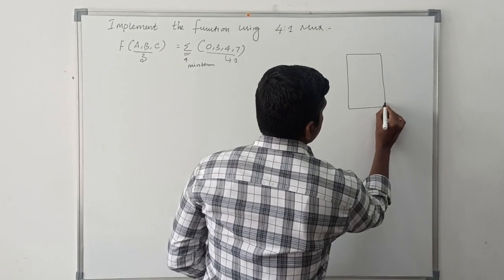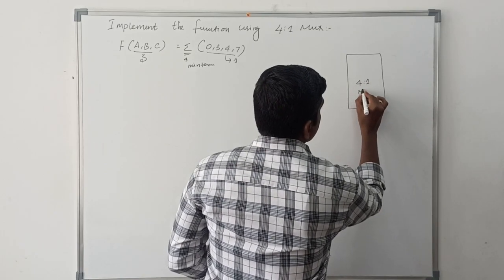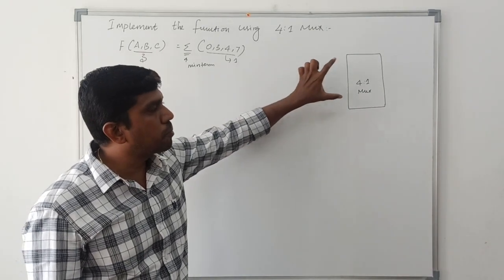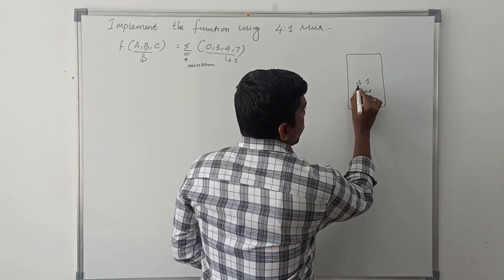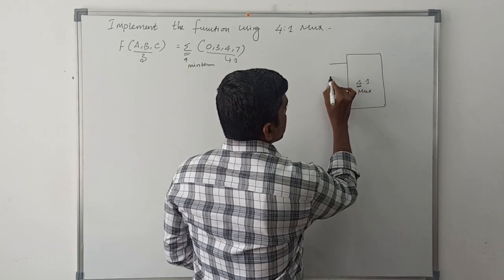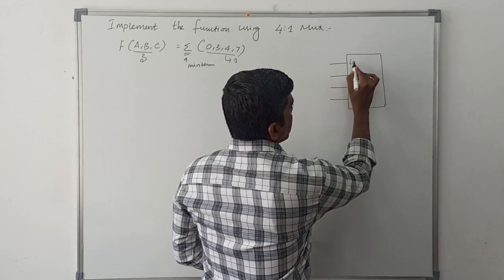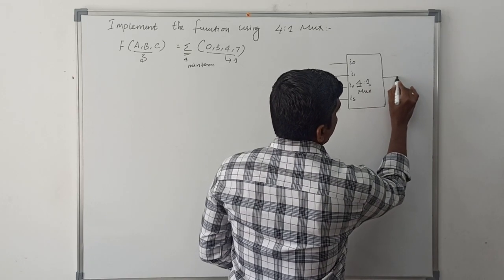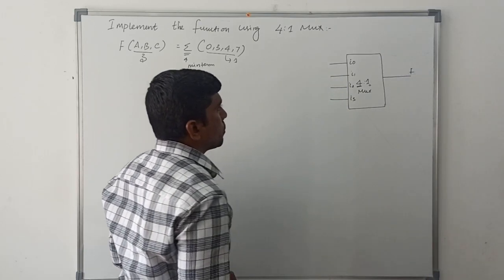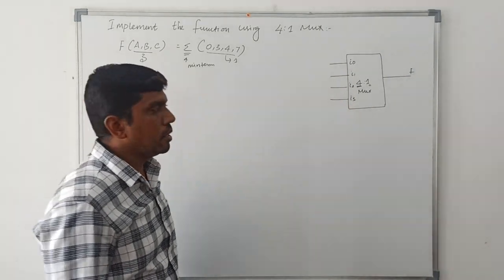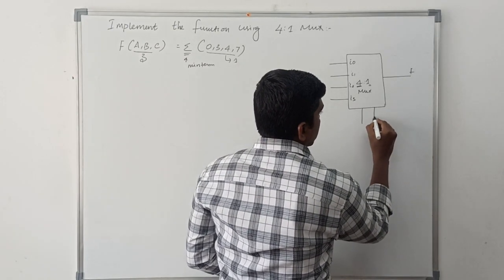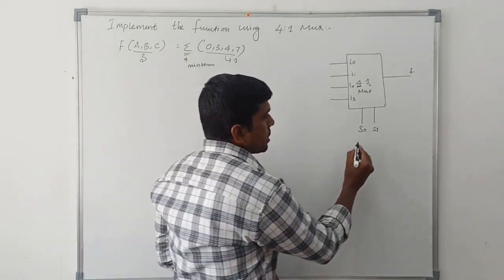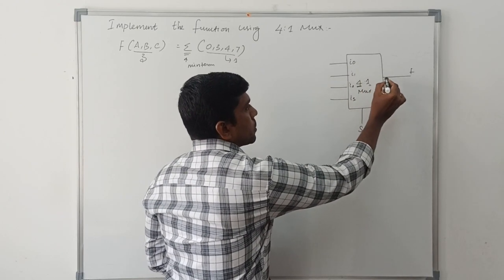It is a 4-to-1 MUX. MUX means many inputs to 1 output — it converts many inputs to 1 output. The '4' represents 4 inputs, named I0, I1, I2, and I3. The '1' represents 1 output F. It also needs two selection lines, S0 and S1. Based on the selection line, the input value is connected to the MUX output.